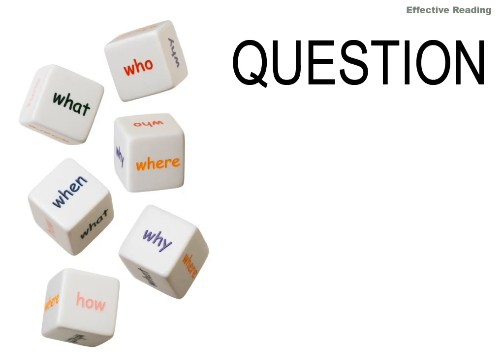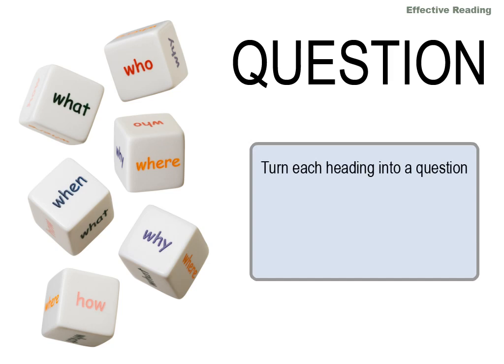Turn each heading and subheading into a question. Ask yourself what you already know about these topics — even if you don't know much, this helps your brain associate the new information with the old information, making it easier to remember. Use question words like which, when, what, why, where, how, and who to get you started. If it would make you more comfortable, write down these questions to refer to as you read.